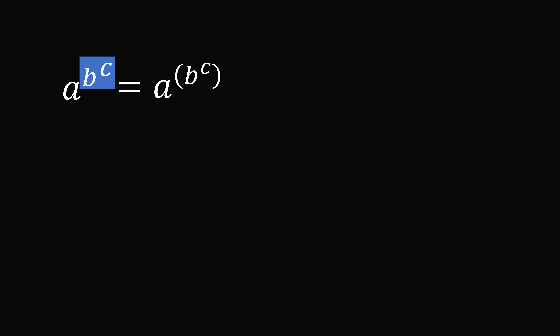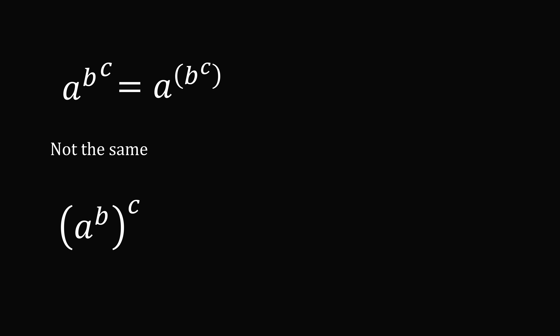I first want to review an important point. If you have a to the power of b to the power of c, this means you evaluate b to the power of c first. In other words, you put parentheses around b to the power of c. This will not be the same thing if you have a to the power of b as a group term raised to the power of c.